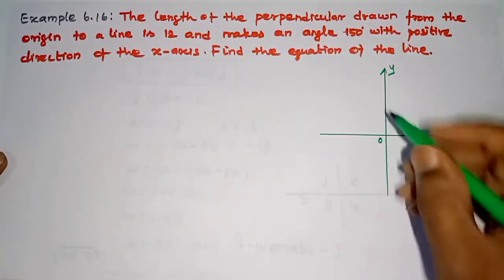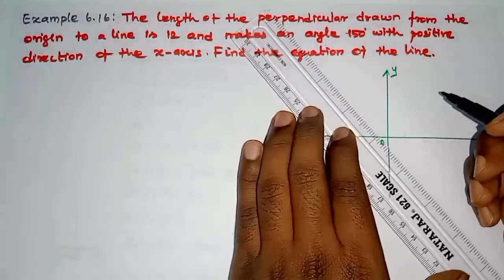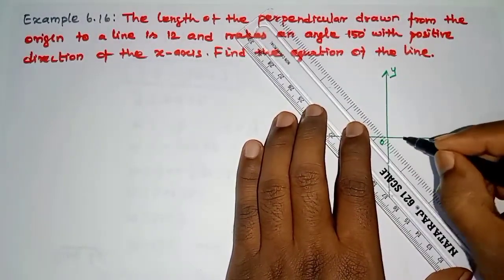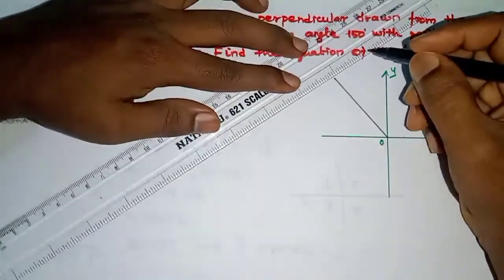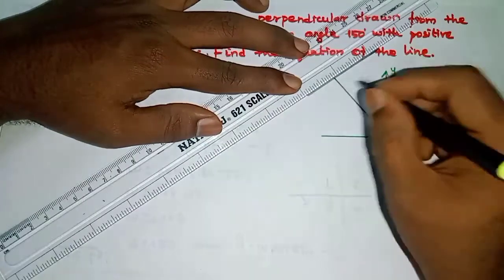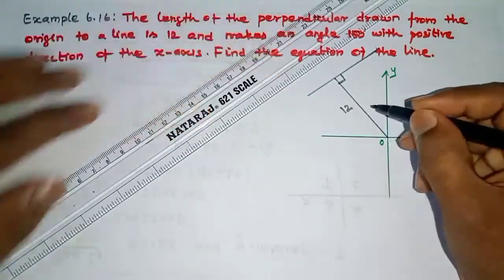This is the line. First, I am going to draw a perpendicular line at 150 degrees from the positive x-axis. This is the perpendicular. The distance is 12 units.